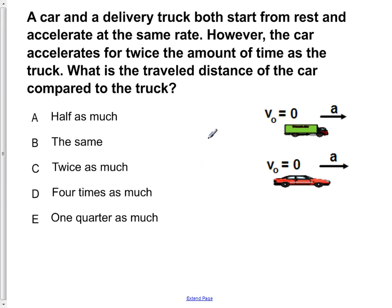Once again we're going to pick out our given information. So it states that both of the objects start from rest, which is shown here. V-naught of each is equal to zero meters per second. Also, it states that they accelerate at the same rate. So the A for each is the same as shown in the diagram here.